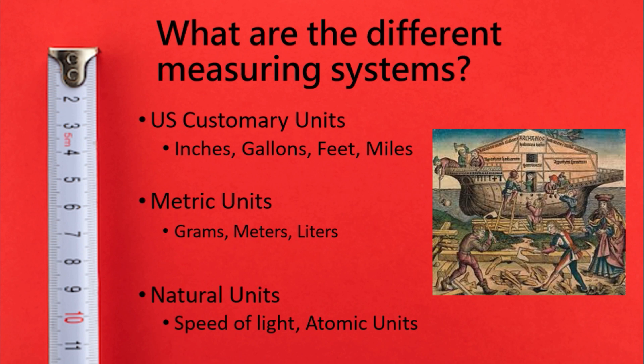In the rest of the world, they typically use the metric system, which includes grams, meters, and liters, and we'll talk about a few others. Keep in mind there are also a few other systems, including the natural unit system. These tend to be things that come from nature, such as the speed of light, atomic units, or even gravity, which is a specific number commonly used and assumed when talking about certain fields of science.